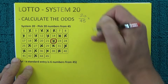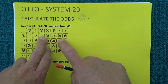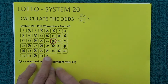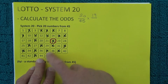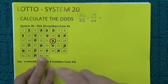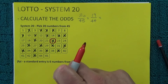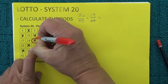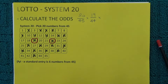When the second number is drawn, you're left with 19 boxes that have a black X — 19 numbers you've selected — and one number has already come out of the barrel, so you've got 19 chances in 44 of matching the second number drawn. We'll assume 19 was the second number drawn and mark it off to show it's been matched.